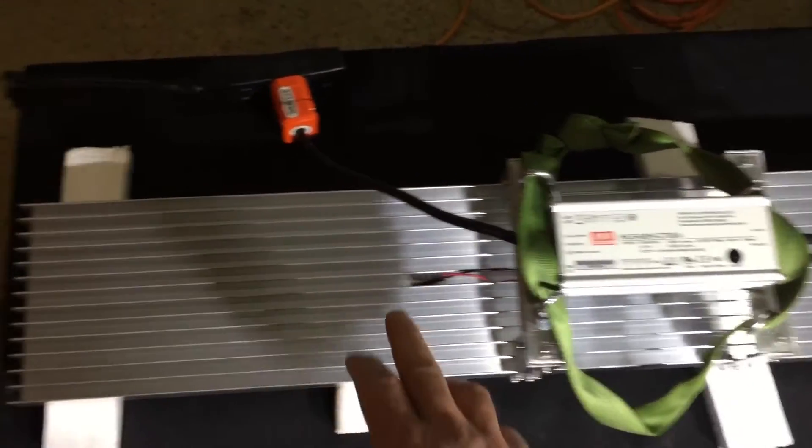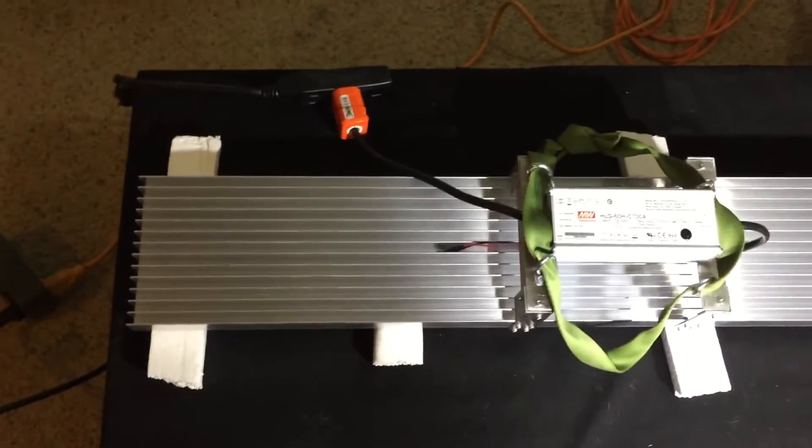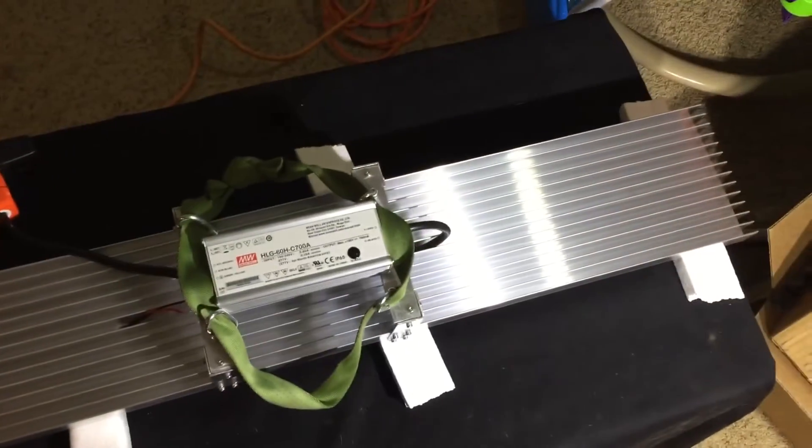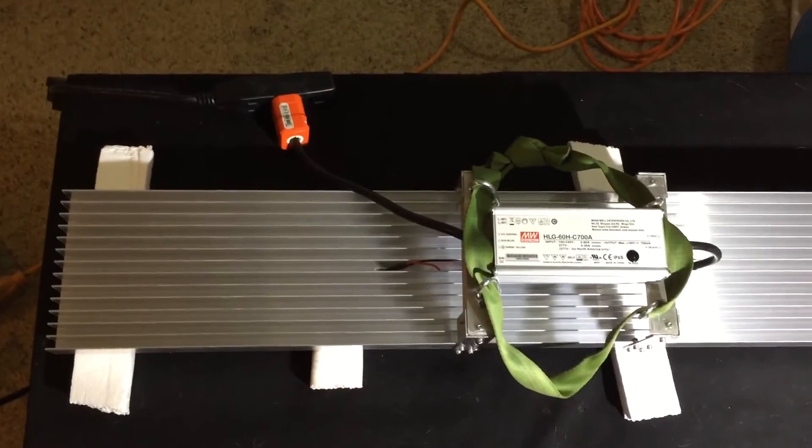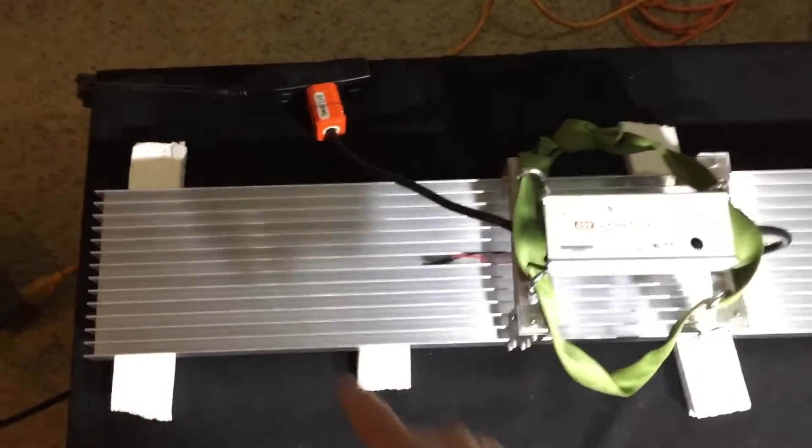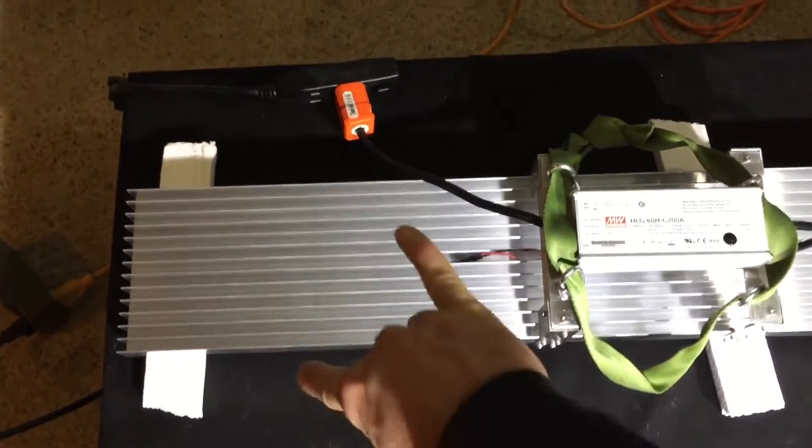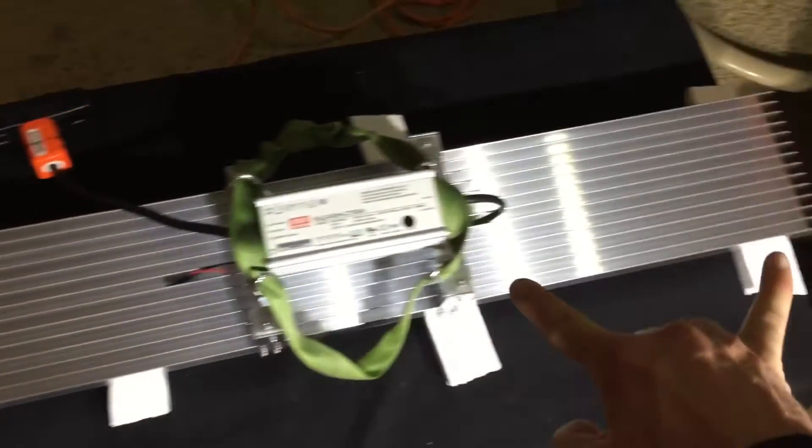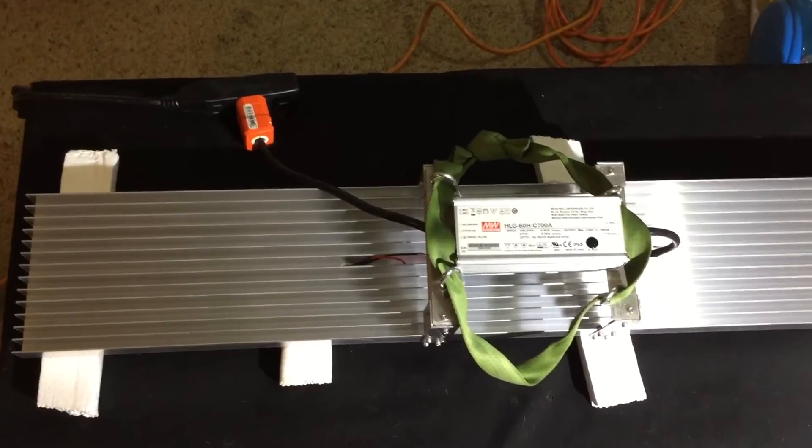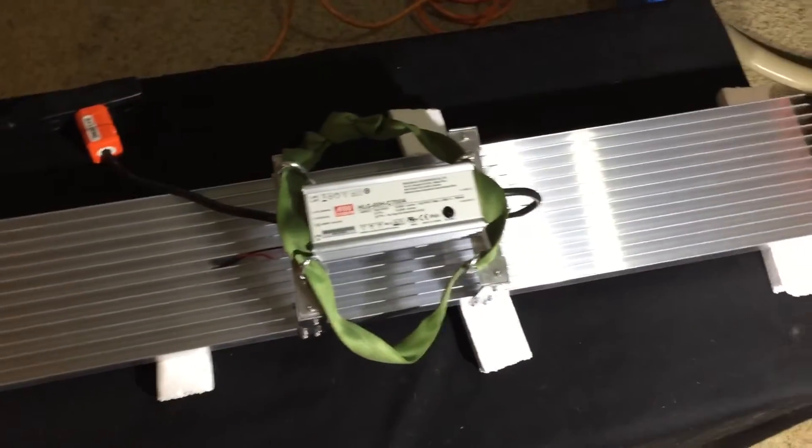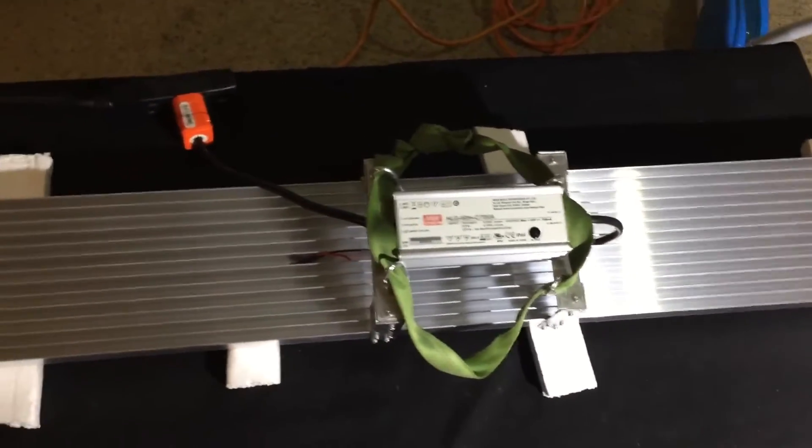Next up we have this big heatsink here. It is a Heatsink USA 5.88 inch wide, so 6 inches wide, 36 inch long. It's a big beefy one for sure. I initially had fans bought, but I don't need fans on this just because it's so big and beefy and I'm running the LEDs really softly.